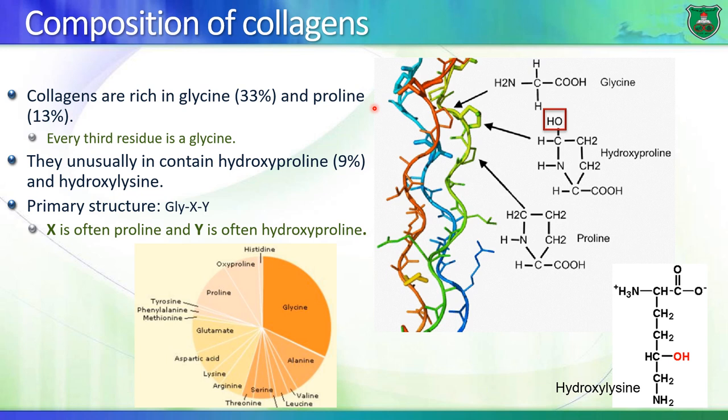Collagen is also rich in proline — 13% of the primary structure of collagen is proline. Remember, proline forms a ring structure; it's a rigid molecule that is not flexible and cannot form a hydrogen bond at the alpha amino group. The collagen molecule also contains hydroxyproline, making up 9% of the primary structure. So about 20% of the collagen molecule is basically proline or a modified proline.